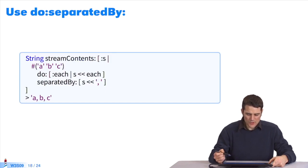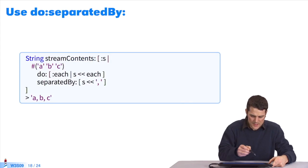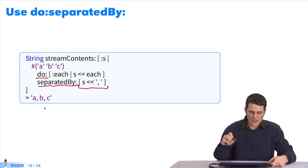There are other ways. Here, I use do separated by. I have a collection. I browse every element. Whenever one element is browsed, I give value to one block which matches a comma. So I can browse A, display a comma, then B, then a comma, then C. Between each element, I perform one action.